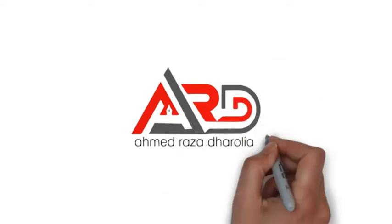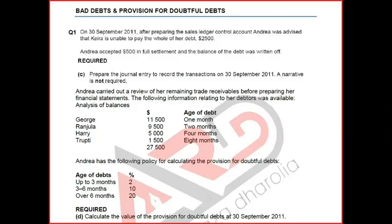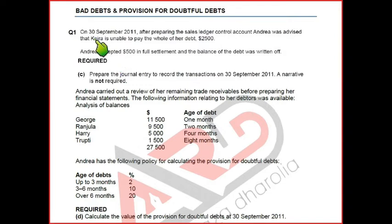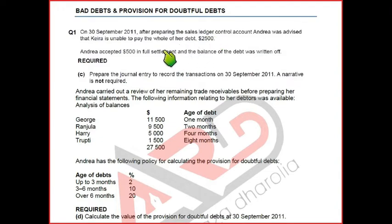Welcome to Accounting by ARD. On 13th September 2011, after preparing the sales ledger control account, Andrea was advised that Kira is unable to pay the whole of a debt of $2,500. Andrea accepted only $500 in full settlement, meaning the remaining $2,000 would not be expected and is basically a bad debt. The balance was written off as bad debt.